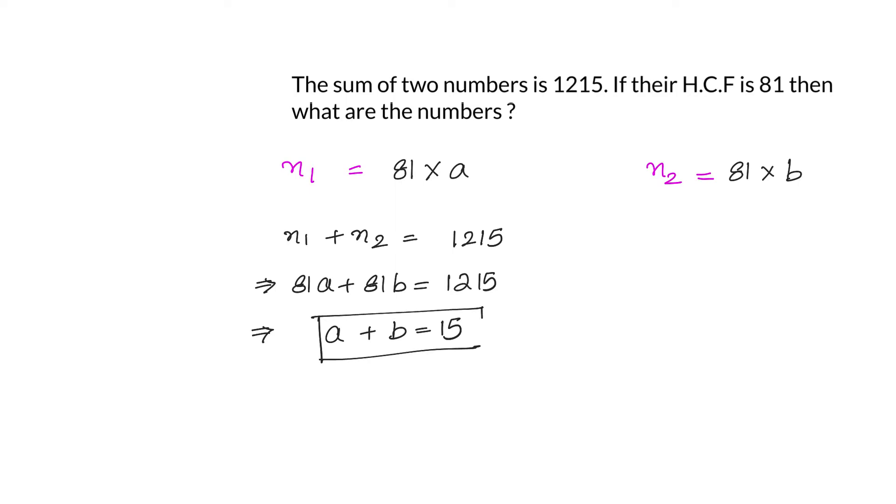So if a plus b equals to 15, that means we need to pick the values of a and b in such a way that a plus b equals to 15. Now is that the only condition we have to look into, or something else? Now the most important thing what we have to look into now: the values of a and b such that a, b are co-prime. What is the meaning of co-prime? That means they have only factor 1. a and b are co-prime. So we have to pick the values of a and b such that a plus b is 15, and also a, b are co-prime.